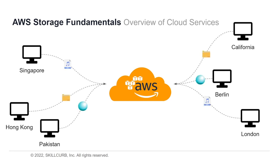So all of them would send their files over to the cloud. Singapore sent an MP3 file, so did London. Hong Kong sent a file, so did California. And Pakistan sent an object and so did Berlin. So now we have two MP3 files, two normal files, and two objects within the AWS cloud.